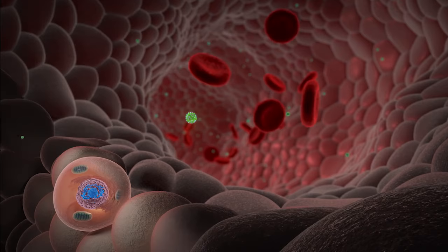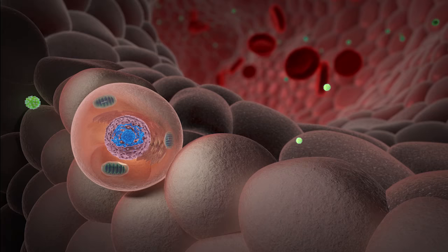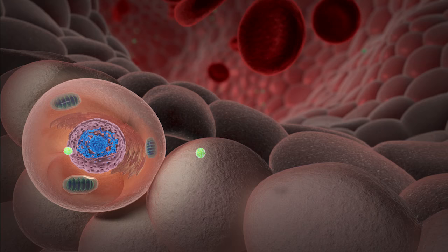After contracting HIV through certain bodily fluids, the body's immune system engages in a losing battle with the virus. As HIV circulates through the bloodstream, it attaches to some cells and repurposes them to produce more virus.